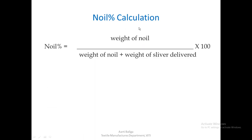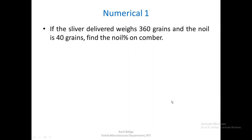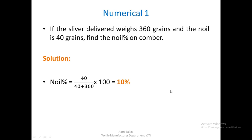Let us see how to calculate noil. Noil percentage can be calculated using: weight of noil divided by (weight of noil plus weight of sliver) multiplied by 100; or weight of noil divided by weight of the lap fed multiplied by 100. For the first problem: if the sliver delivered weighs 360 grains and the noil is 40 grains, find the noil percentage. Using the first formula: 40 divided by (40 plus 360) multiplied by 100 gives 10 percent.